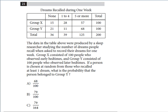Let's read the question. The data were produced by a sleep researcher studying the number of dreams people recall when asked to record them for one week. Group X consisted of 100 people who observed early bedtimes and group Y consisted of 100 people who observed later bedtimes. If a person is chosen at random from those who recalled at least one dream, what is the probability that the person belongs to group Y?